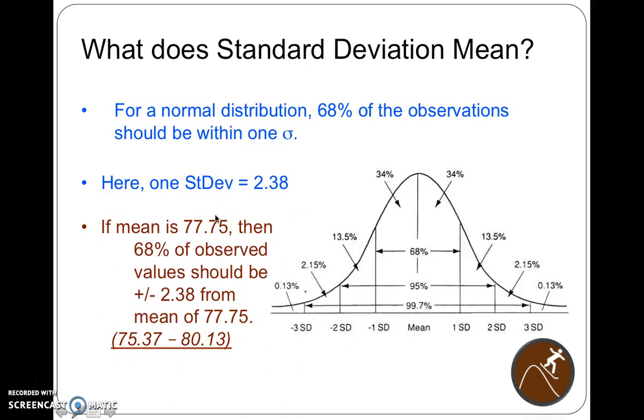So what does the standard deviation mean? Why do we care about it? One standard deviation in a normal distribution means that 68% of the data should fit within one standard deviation of the mean, assuming a normal distribution. If your distribution is not normal, then these numbers are not necessarily true. A normal distribution has this shape to it. And a mean of 77.75 should have numbers that are plus or minus 2.38 from it to be within one standard deviation. So the one standard deviation of the mean goes from 75.37 to 80.13.